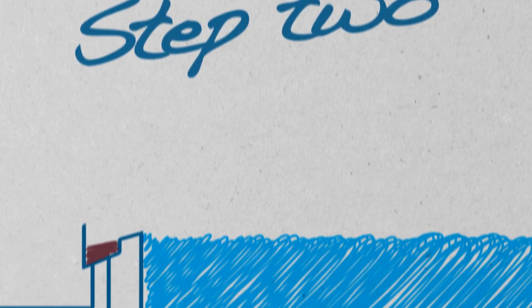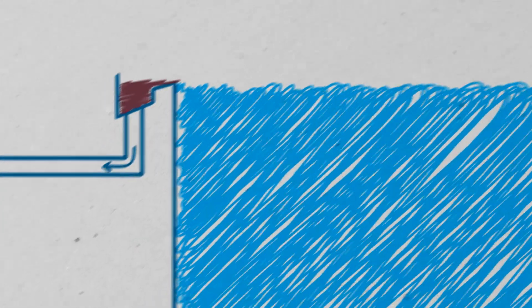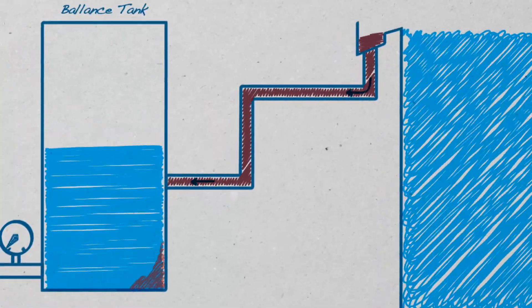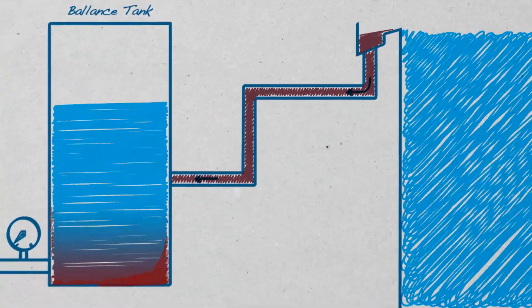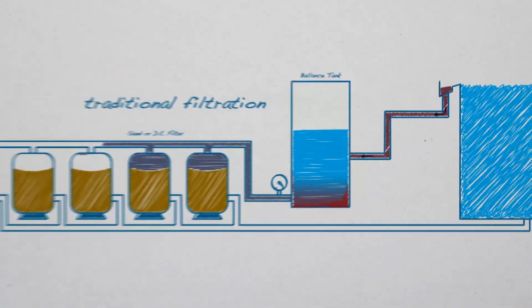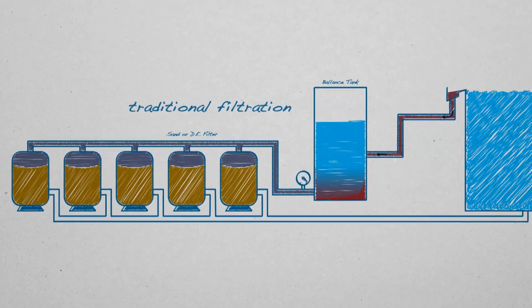The second step in the process is water treatment. Usually dirty water flows by gravity directly to the balance tank where particles settle and begin to dissolve. This water is then pumped to the sand or DE filter where the rest of the particles are captured.